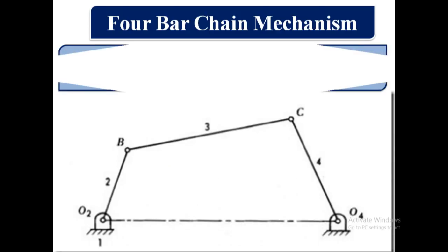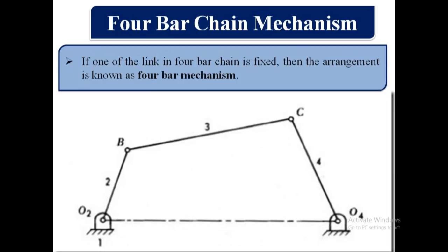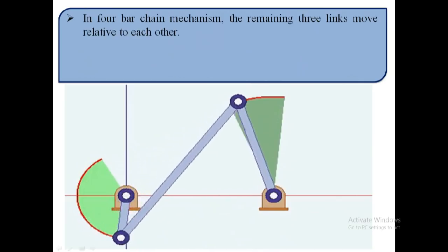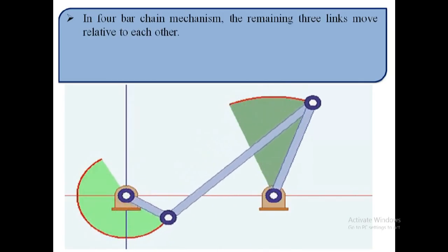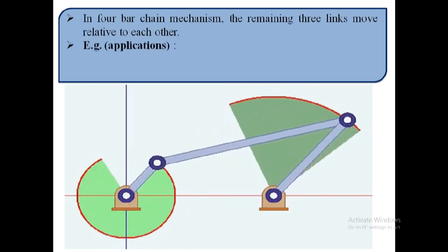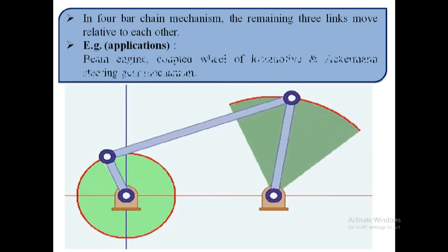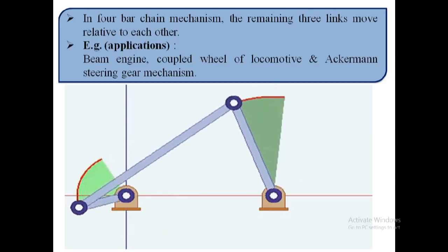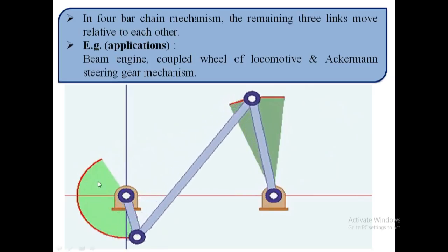Now we will discuss about four bar chain mechanism. If one of the links in a four bar chain is fixed, then the arrangement is known as four bar chain mechanism. In the four bar chain mechanism, the remaining three links move relative to each other. Examples or applications are beam engine, coupled wheels of locomotive, and Ackermann steering gear mechanism.